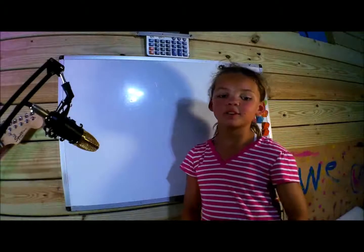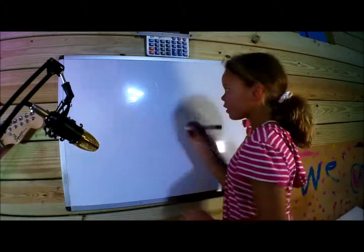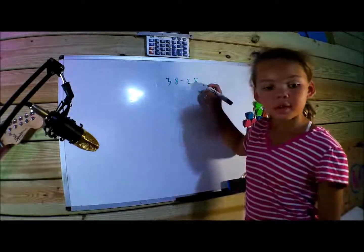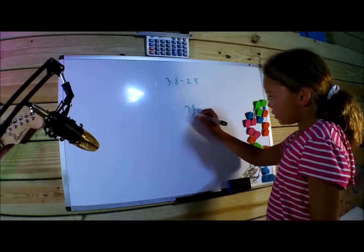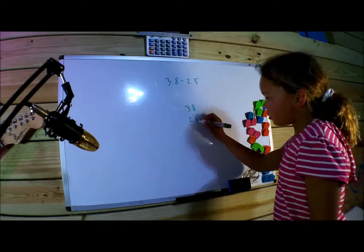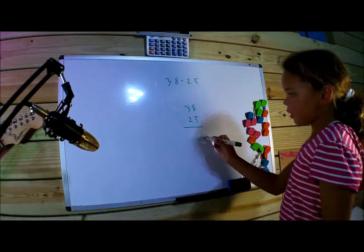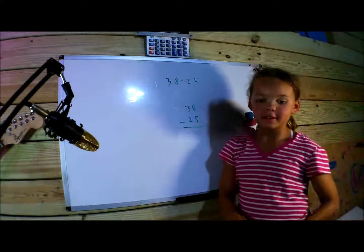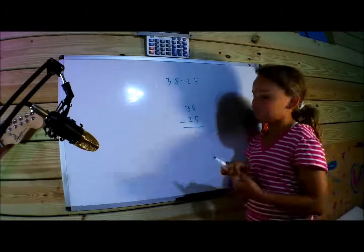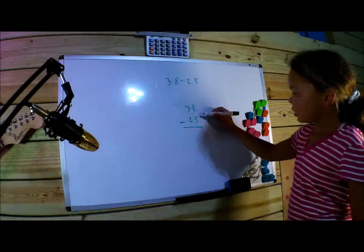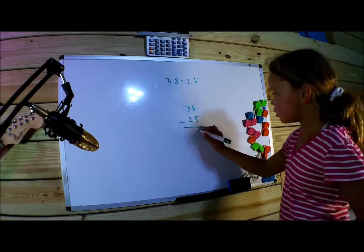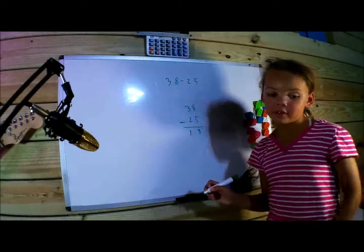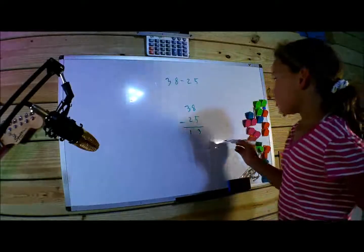Now with multi-digit subtraction, we need to rewrite and stack the numbers. Let's take a look: 38 minus 25. We need to rewrite it with 38 and 25 underneath, then we have the answer line, and we put a subtraction symbol next to the 25. Start with the ones column: 8 minus 5 equals 3, and 3 minus 2 equals 1. So 38 minus 25 is 13.